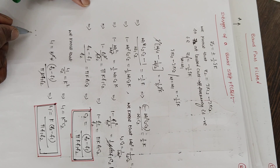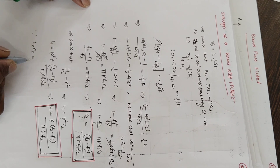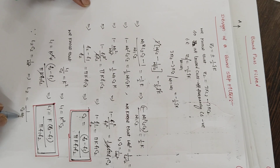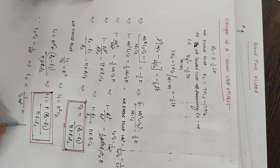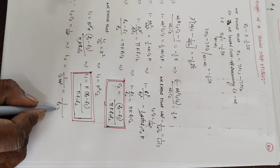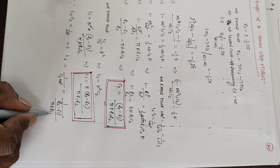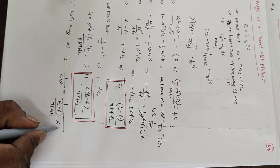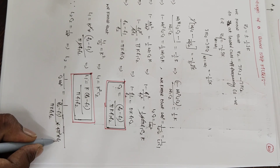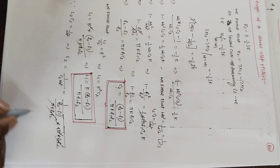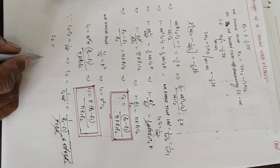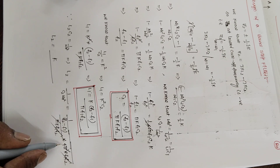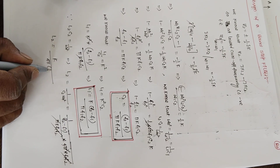Since L2·C2 = 1/ω₀², we get L2 = 1/(C2·ω₀²). Substituting C2 = (f2 minus f1)/(π·K·f1·f2) and ω₀² = 4π²·f1·f2, the f1·f2 terms and one π cancel, leaving L2 = K/(4π·(f2 minus f1)).